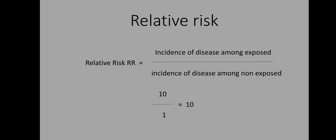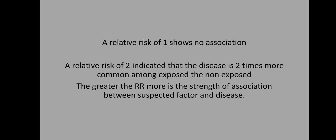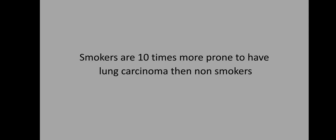How do we interpret relative risk? If the relative risk is 1, it shows no association between the supposed causal factor and the outcome. A relative risk of 2 indicates that the disease is 2 times more common among the exposed than the non-exposed group. The greater the relative risk, the stronger the association. In our example, the relative risk is 10, so we can say that smokers are 10 times more prone to lung carcinoma than non-smokers.